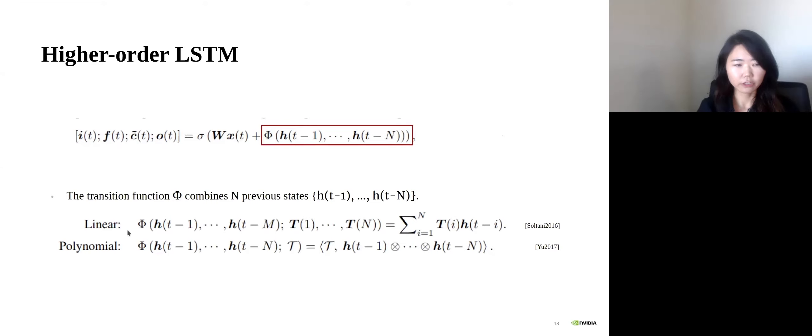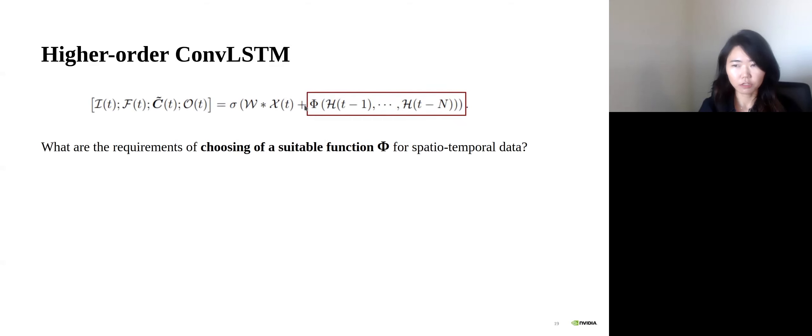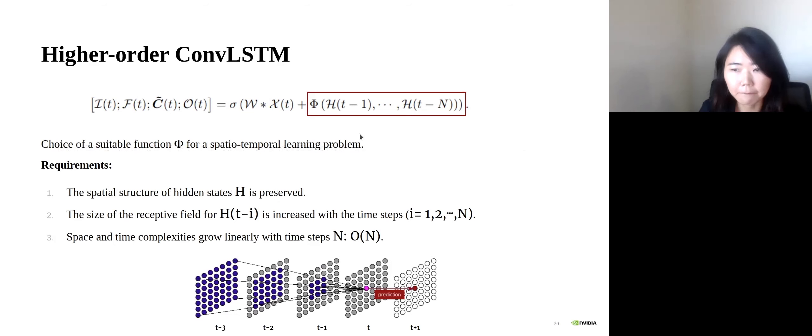Now the question is, how to combine these history states? In the literature, linear or polynomial functions are used to combine n hidden states. Now we want to design this function for spatial temporal data. And now the question is, what are the requirements to choose a suitable function phi? We defined three requirements shown here. First, the spatial structure of hidden states should be preserved. And the size of the receptive field for H should increase with the time steps, so the model can learn not only the close neighborhood, but also the wider context of the data. Lastly, space and time complexities should not grow exponentially.